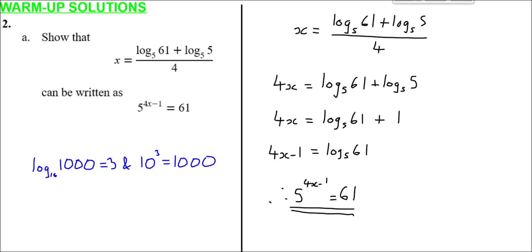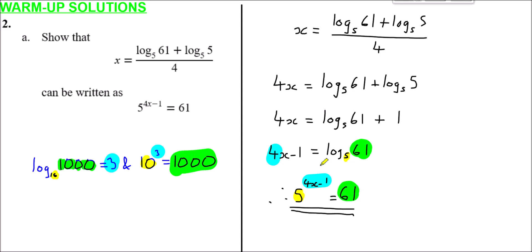In terms of seeing how it links: the base here is 5, which becomes the base on the other side; the 61 relates to where 1000 would appear; and the 4x minus 1 relates to where the power 3 would appear. Once you get used to how the numbers and values rearrange within the same equation, it just becomes a useful shorthand for solving questions a bit quicker. That's why I'm illustrating how these numbers and values move around within the same equation.